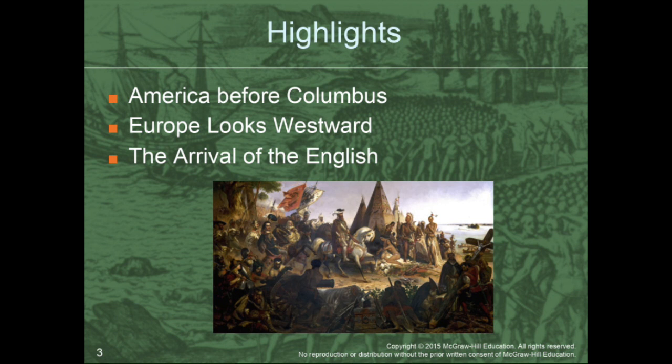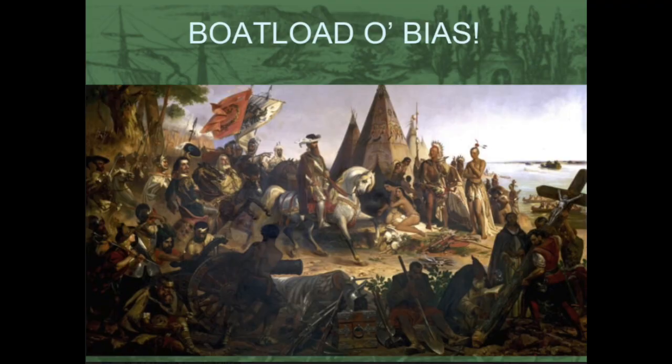This chapter is broken up into three sections. We'll look at America before Columbus; we'll look at Europe as it looked westward before Columbus established contact between the Eurasian continent and North and South America; and then we'll also look at the arrival of the English. But first, there's a boatload of bias going on in this image here — see if you can identify the bias and who probably drew this picture and how they represent the various groups presented within it.